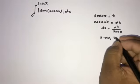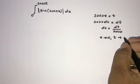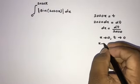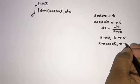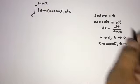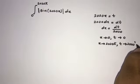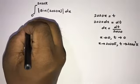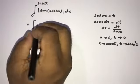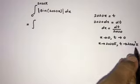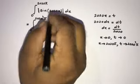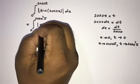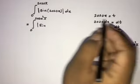For the limits: when x approaches 0, t approaches 0. When x approaches 2020 times π, t approaches 2020 squared times π. Now we can substitute into the integral.